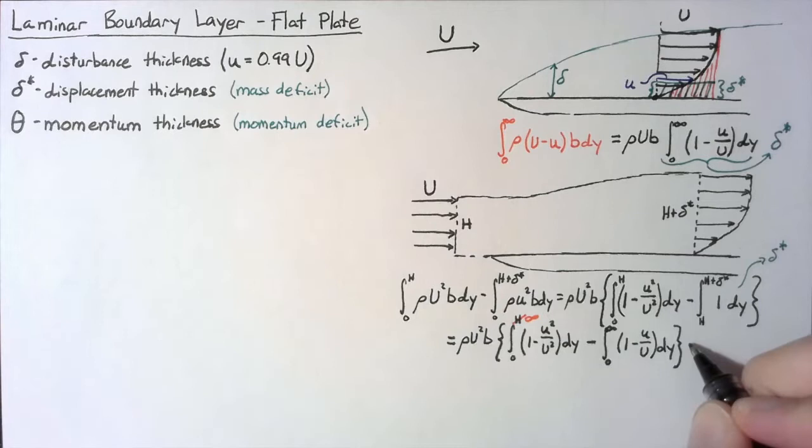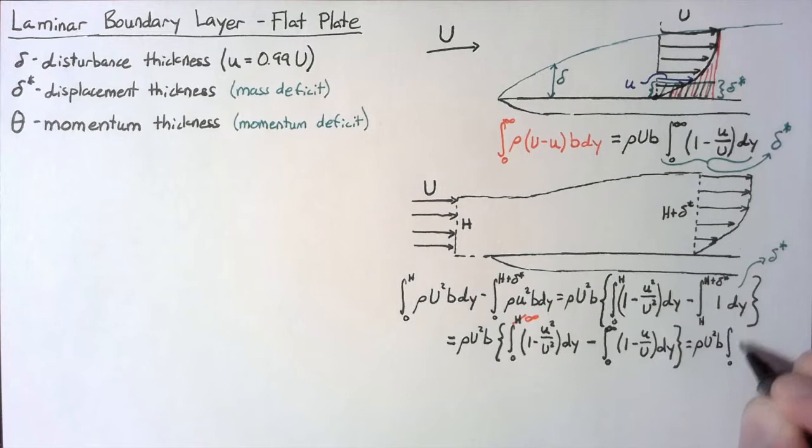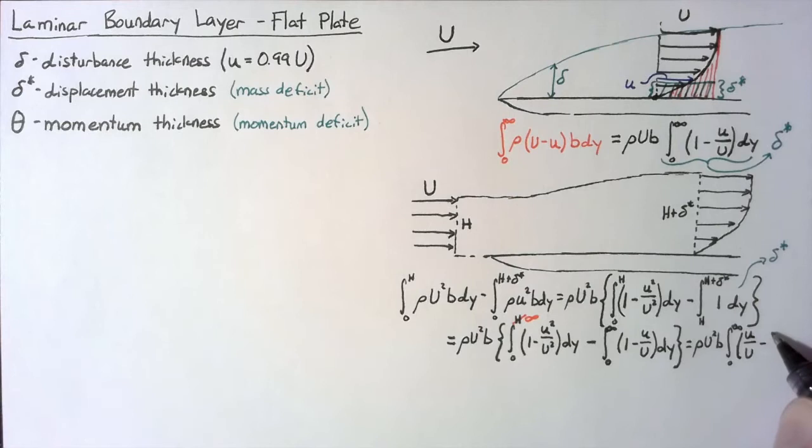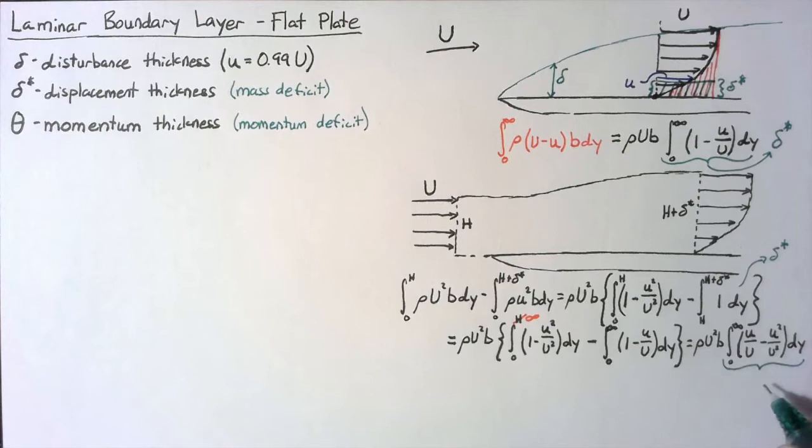So the end result is rho U² b multiplied by the integral from 0 to infinity. The ones are going to cancel out, our u over U is going to end up being positive, and then we'll subtract off our u² over U². This integral right here is exactly our momentum thickness.